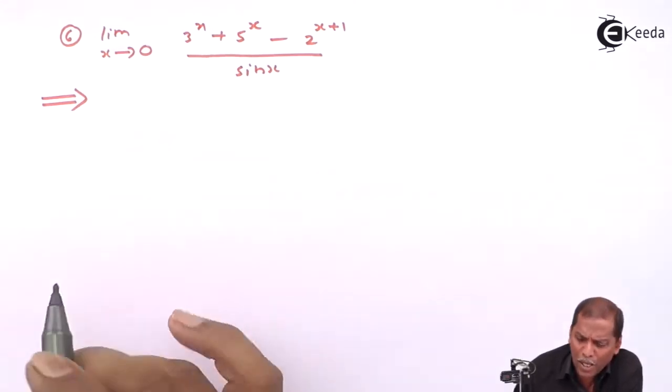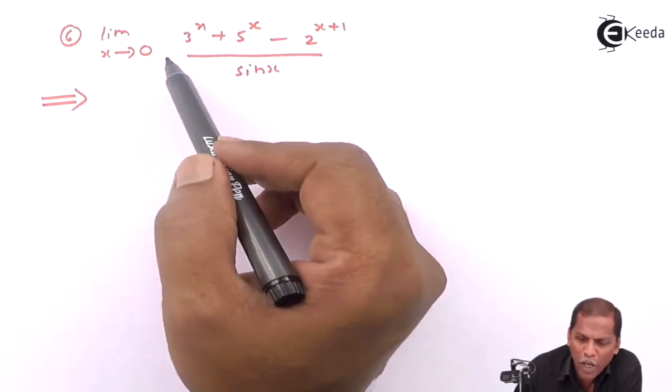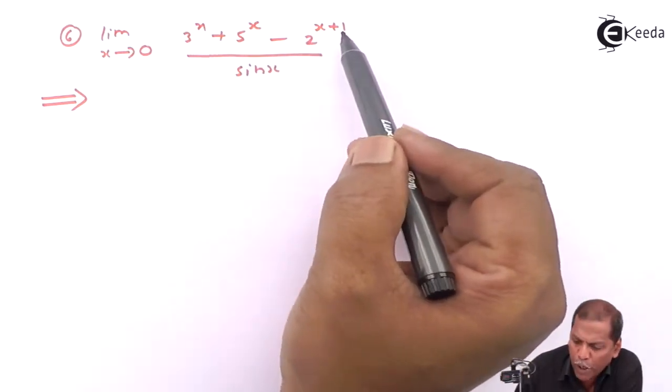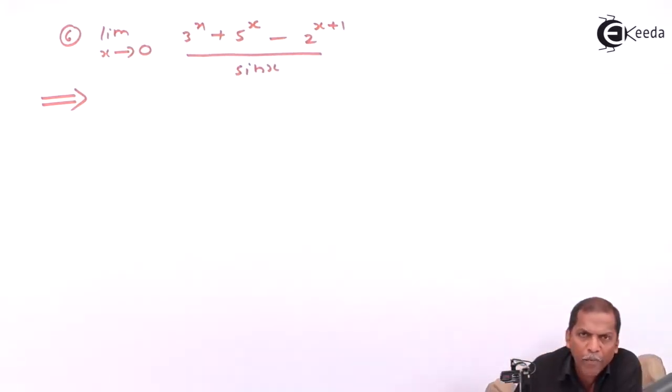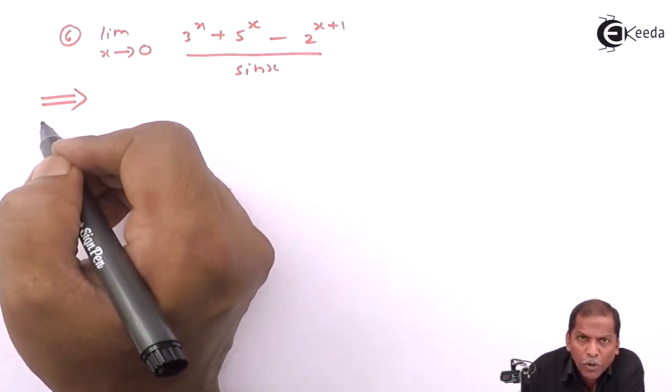The problem number 6 is limit x tends to 0, 3 raise x plus 5 raise x minus 2 raise x plus 1 whole thing divided by sin x. Now let's see the solution.